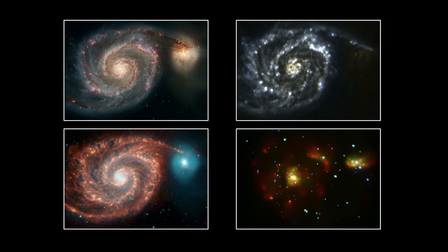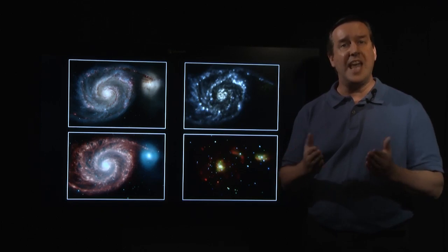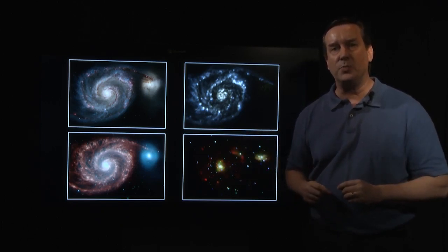Each of these different types of light shows us a different characteristic of the same object. It is one of the great advances of the last century that astronomers now use every type of light across the electromagnetic spectrum in studying the cosmos.